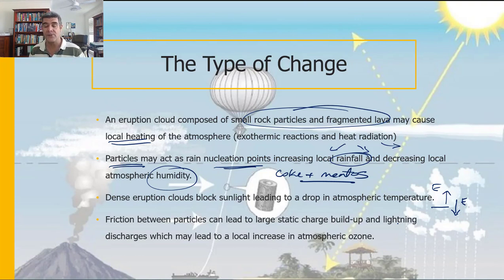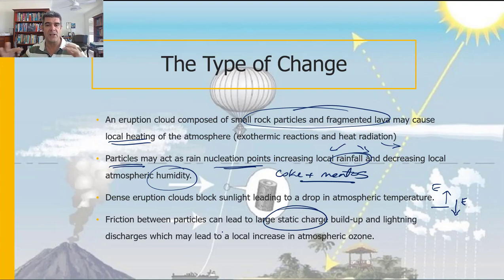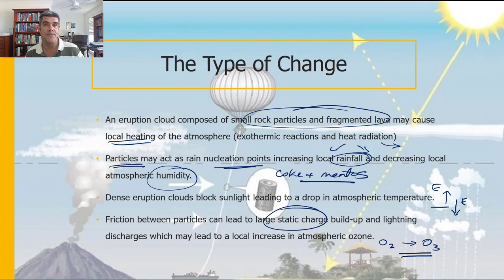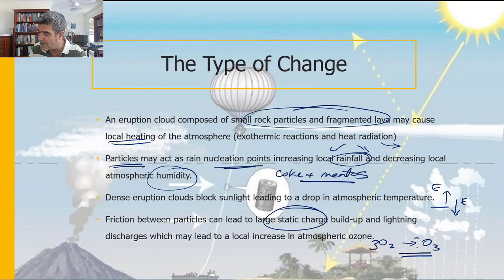Friction between particles can lead to large static charges. As seen in the recent Tonga volcanic eruption, huge amounts of electricity were associated with the forming ash cloud, and you get large lightning discharges. This can affect atmospheric ozone — lightning strikes can convert oxygen into ozone. Ozone in the stratosphere is beneficial as it protects against ultraviolet radiation, but ozone in the troposphere, the layer we breathe, is not good.